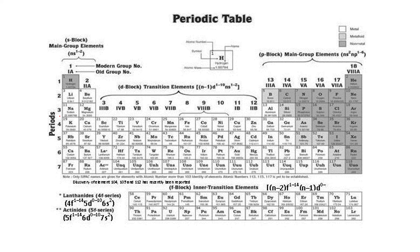In the 11th or even 10th standard you discussed the periodic table. There are 18 groups, starting from group 1 to 18 according to the modern periodic table. Elements of group 1 and group 2 are known as S-block elements, and group 13 to 18 are known as P-block elements.